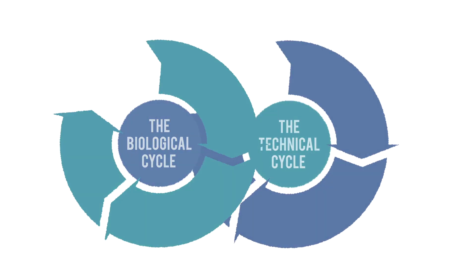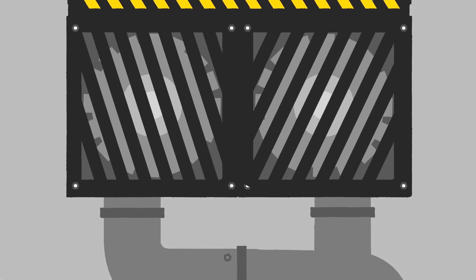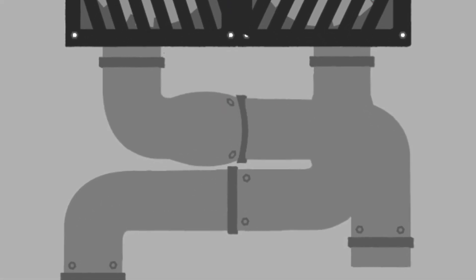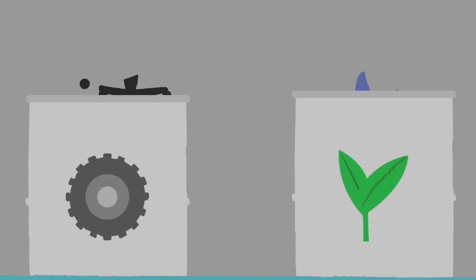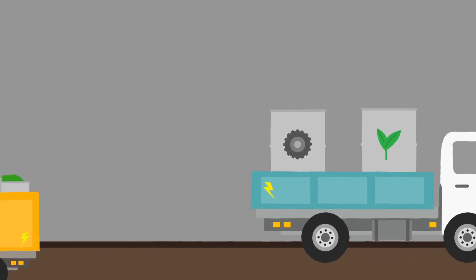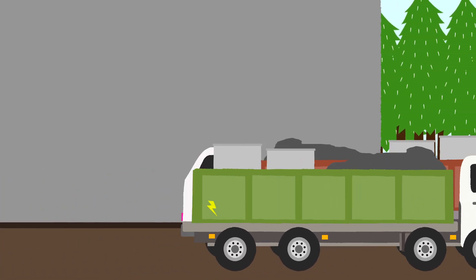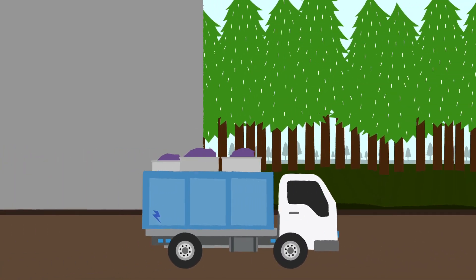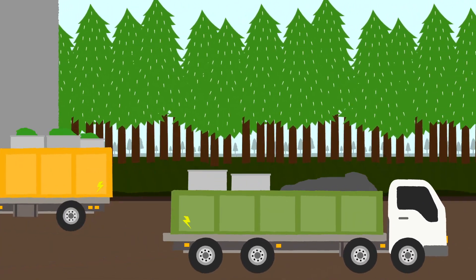Now, let's put these two cycles together. Imagine if we could design products to come back to their makers, their technical materials being reused and their biological parts increasing agricultural value. And imagine that these products are made and transported using renewable energy. Here we have a model that builds prosperity long term.